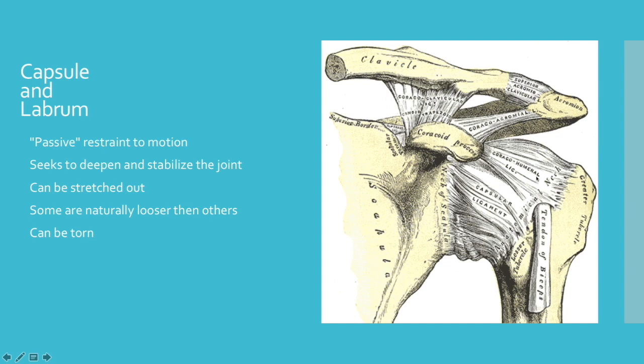However, the capsule and the labrum seek to deepen and also to stabilize the joint. So if the ligaments, the capsule, so the capsule is a series of ligaments that surround the shoulder joint, if these are nice and strong, then they're going to help to deepen and stabilize the joint. The other piece, and this is important, is that the capsule and the labrum can be stretched out.